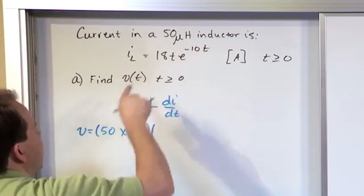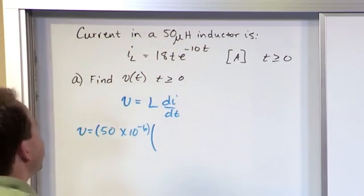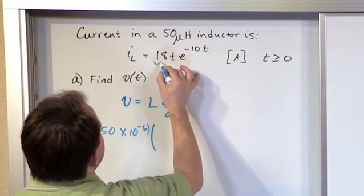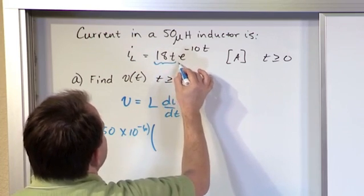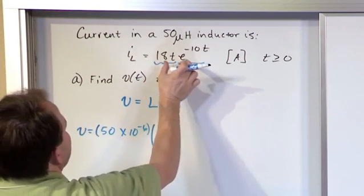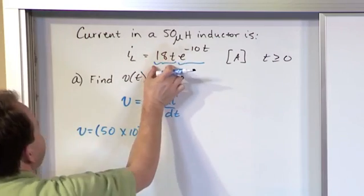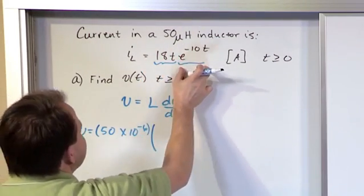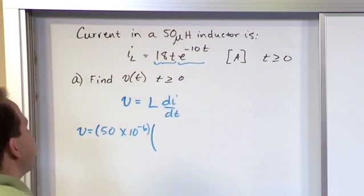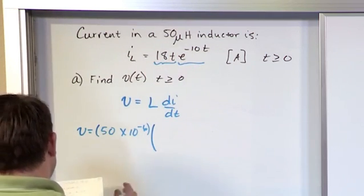So we need to find the derivative of this current as a function of time. Now notice that it's kind of like two little functions here. You have this one as a function of time times this one. So you need to use the product rule of differentiation. The first term times the derivative of the second plus the second term times the derivative of the first term. So that's what we're going to do here.